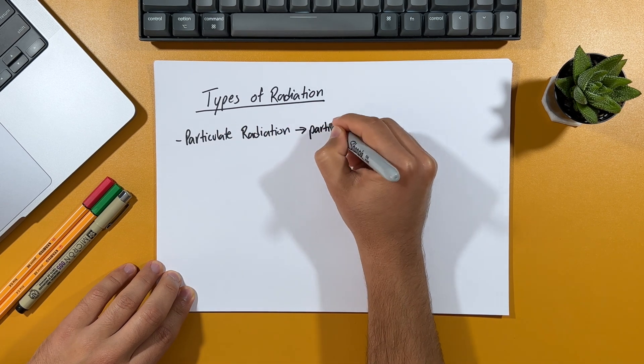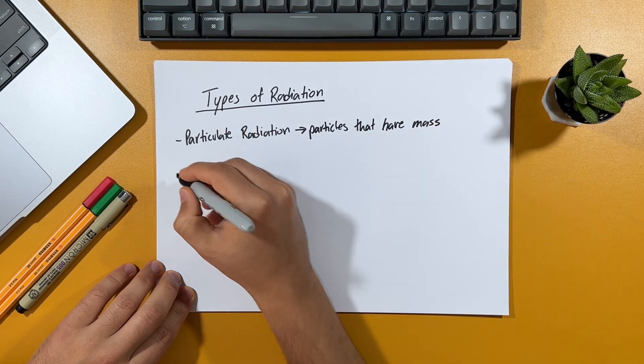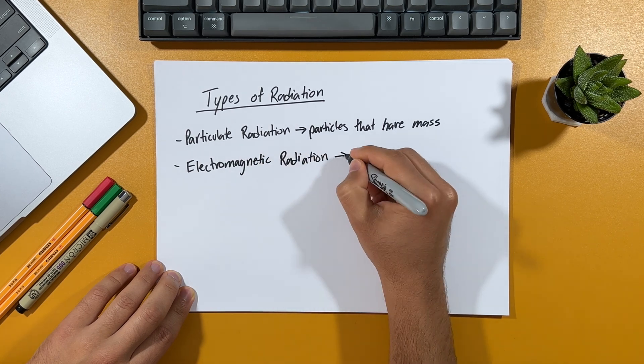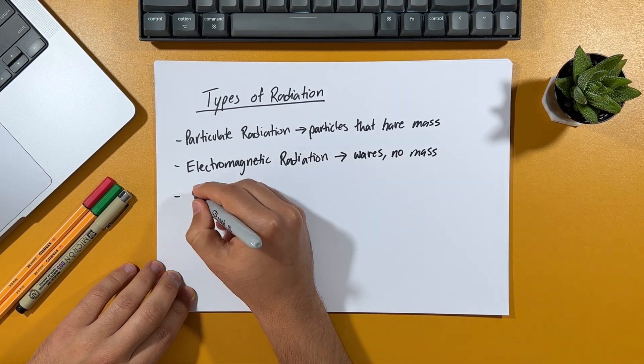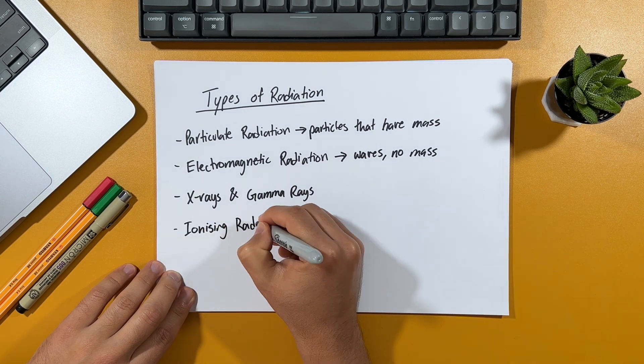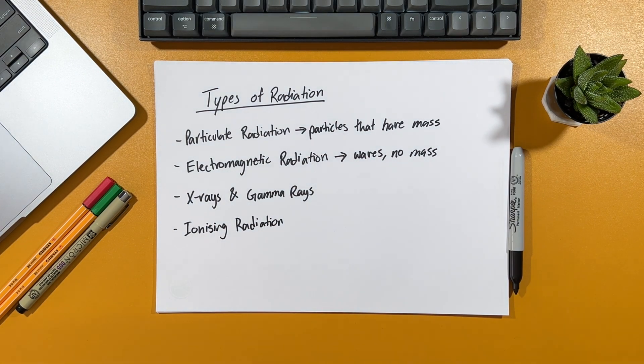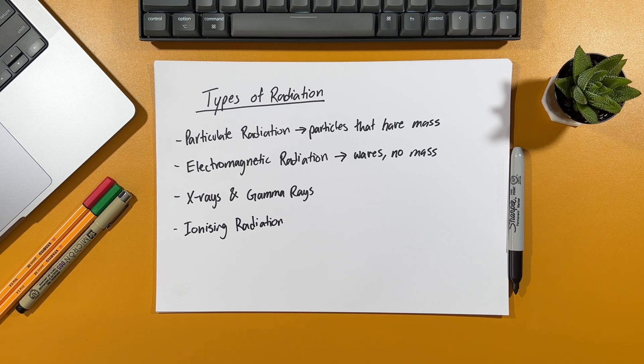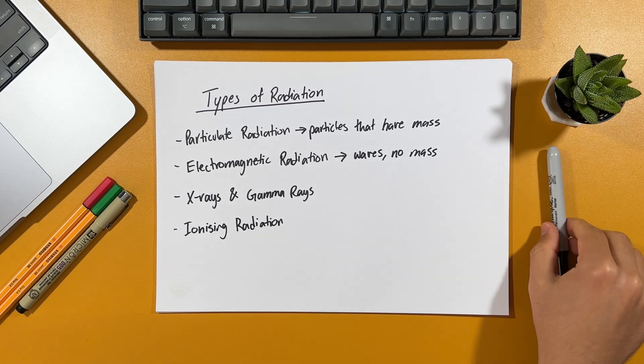Then we'll flip the script and talk about the electromagnetic radiation, which are traditionally thought of as waves. Then delve more specifically into x-rays and gamma rays. And I'll finish talking about ionizing radiation, which is really what we're all here for, what it all means for you, and why it's important to understand.